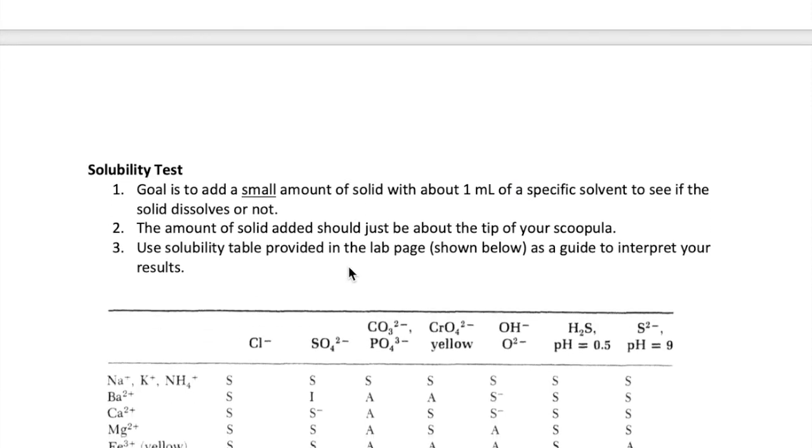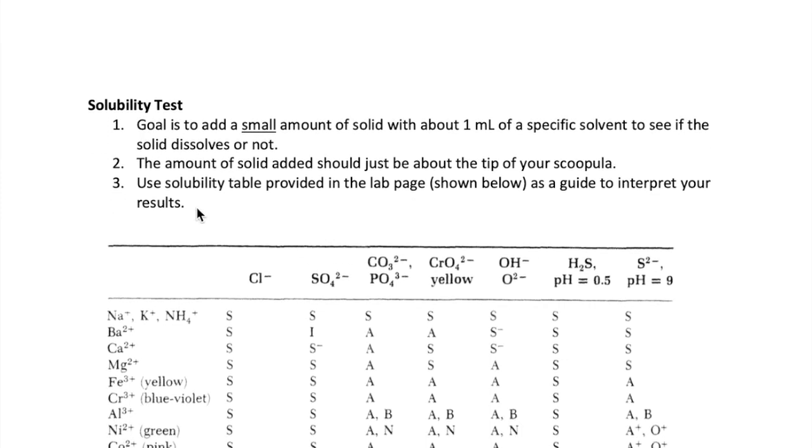So let's discuss methods that you can use to determine the identity of the unknown. One of the easiest methods is to test for solubility of the solid in a specific solvent. The way you do this is to add a small amount of your solid to a test tube and then add about one milliliter of a solvent. Mix with a stirring rod and then check if the solid dissolves significantly compared to the amount you add. Then use the result to interpret the identity of your unknown.